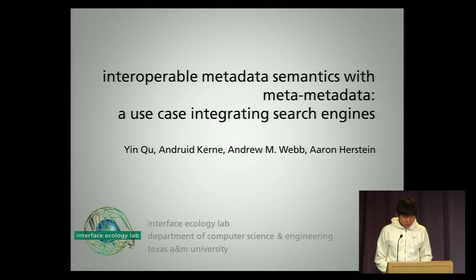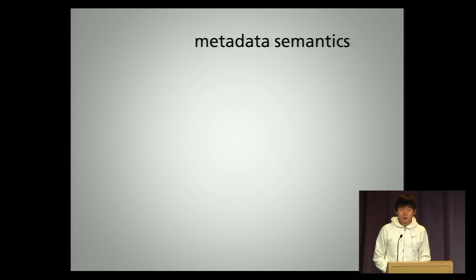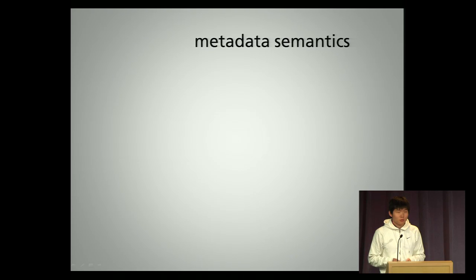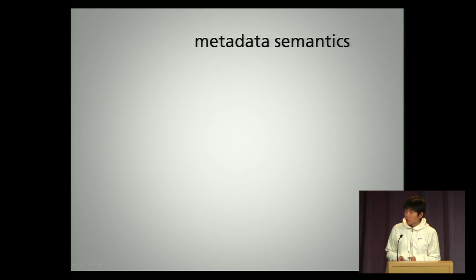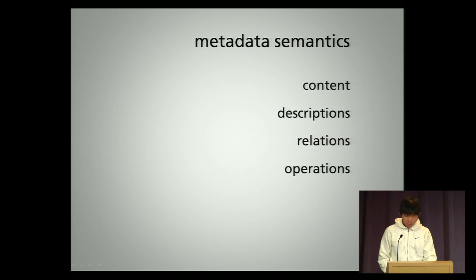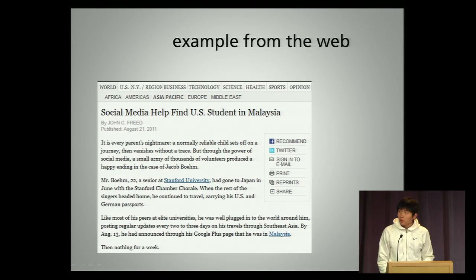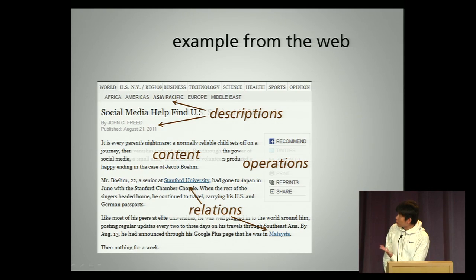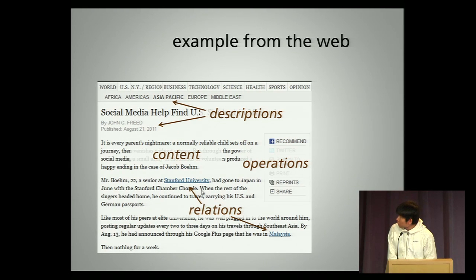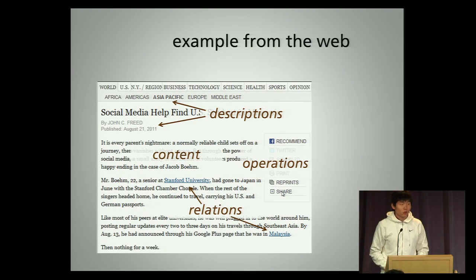So, what is metadata semantics? We define metadata semantics as the conjunction between a document and its content, its descriptions, its operations, and its relations. Let's look at an example. This is an article from the New York Times. We see that in addition to its content, we have descriptions like region, relations in the form of hyperlinks, and operations like share and email, so that you can send it to your friends.